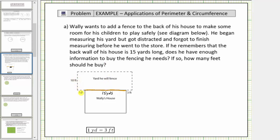However, notice how these lengths are measured in feet, and this length is given in yards. We need to convert this length to feet, and because one yard is equal to three feet, fifteen yards is equal to fifteen times three feet, or forty-five feet.